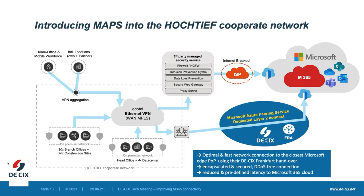The Azure Peering Service provides a dedicated layer to connect over the DE-CIX fabric in Frankfurt, resulting in an optimal and fast network connection to the closest Microsoft edge point of presence. It is encapsulated, secured, DDoS-free, and reduces latency. The connection itself was implemented on an existing firewall cluster, which was already part of the Hochtief corporate network and co-located in Frankfurt.